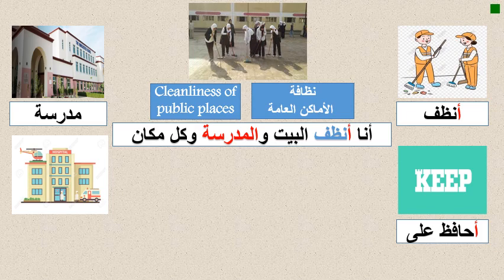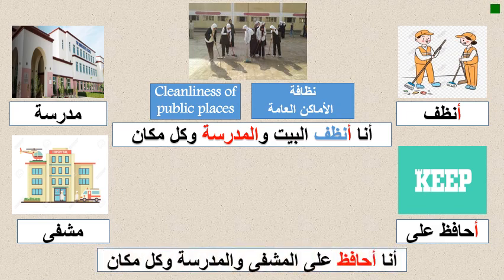I have another word: مشفى — this is a public place like the school. مشفى means hospital. Let's make a sentence: أنا أحافظ على نظافة المشفى والمدرسة — I keep the hospital and school clean — وكل مكان — and everywhere. Don't throw any garbage!